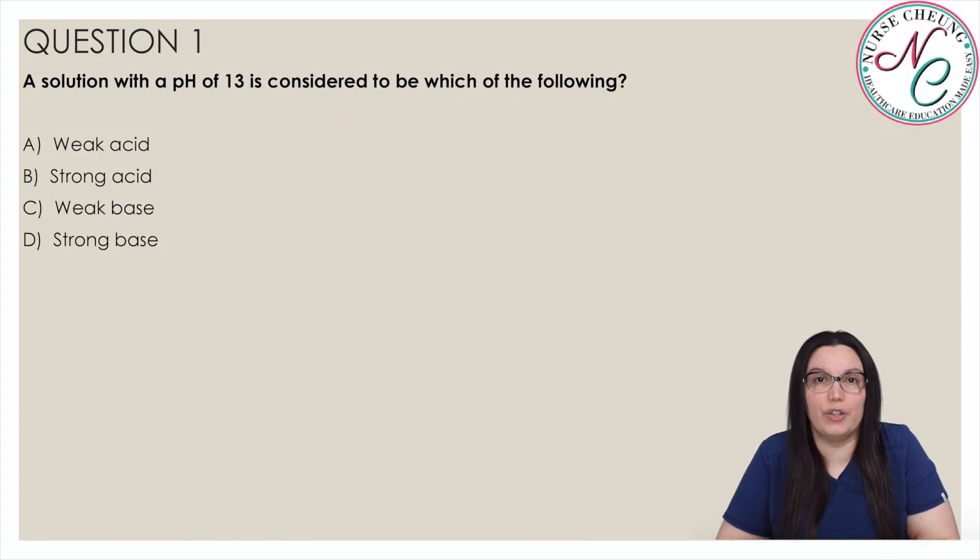A solution with a pH of 13 is considered to be which of the following? A a weak acid, B a strong acid, C a weak base, or D a strong base. And the correct answer is D a strong base. A solution with a pH of 13 is a strong base. Household bleach and oven cleaners are two examples of strong bases.